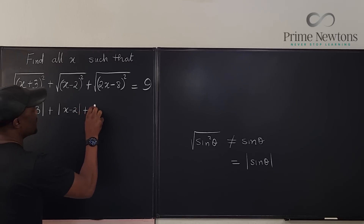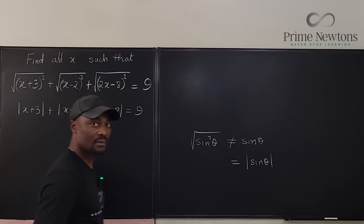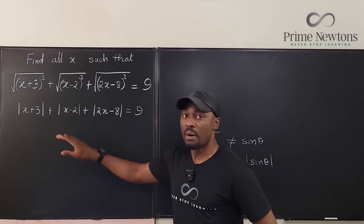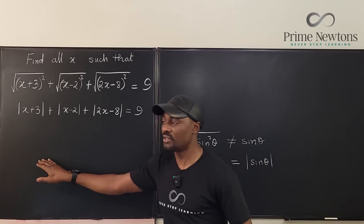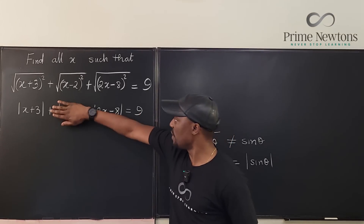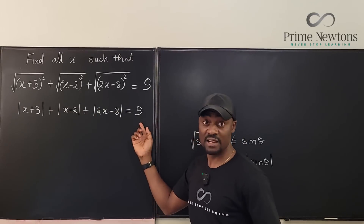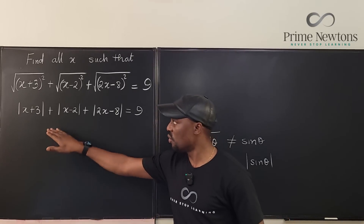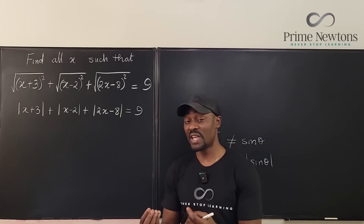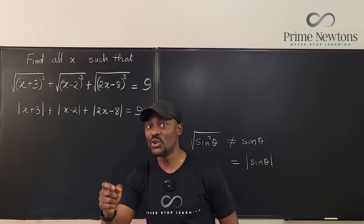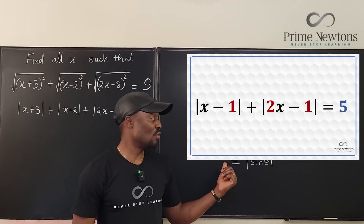So putting all of these together, we have the absolute value of X minus 2 plus the absolute value of 2X minus 8 equals 9. When you have more than one absolute value, you cannot simply generate two equations by setting the expression equal to positive and negative 9. If we didn't have multiple absolute values, you would say X plus 3 equals 9 or X plus 3 equals negative 9. But with more than one, you must rewrite each expression to find the transition points.